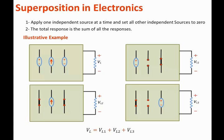In summary, to use superposition, apply one independent source at a time and set all other sources to zero. Voltage sources set to zero are replaced with short circuits, and current sources set to zero become open circuits. Analyze the circuit for each source individually, then sum all the responses to get the total response.